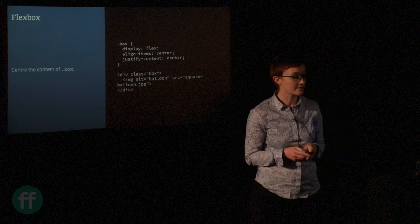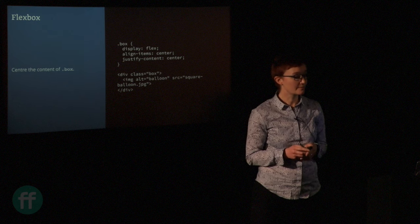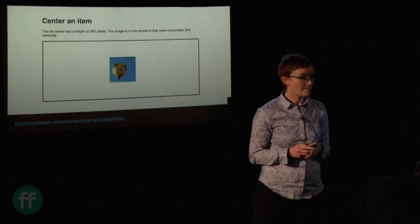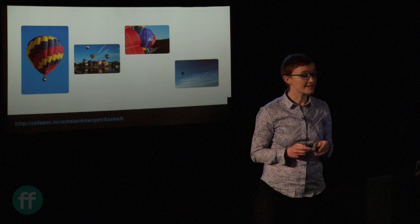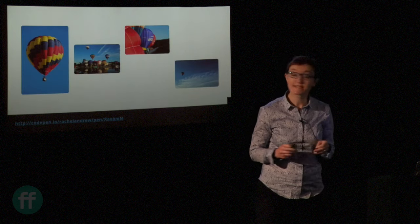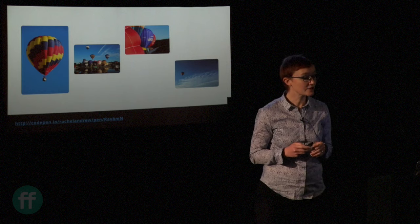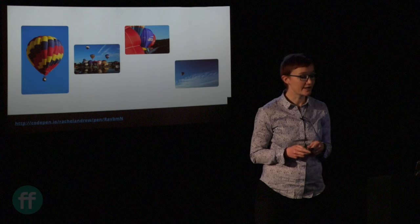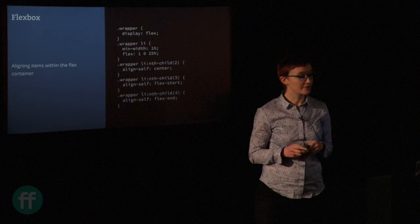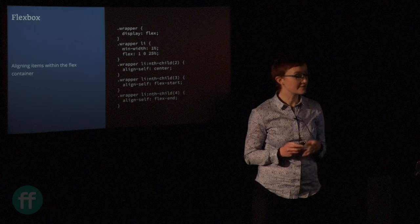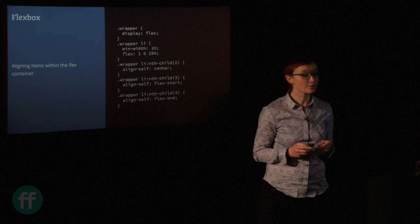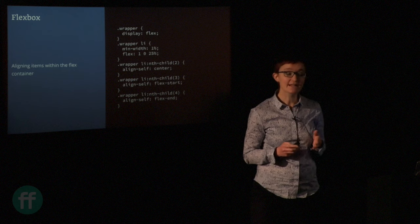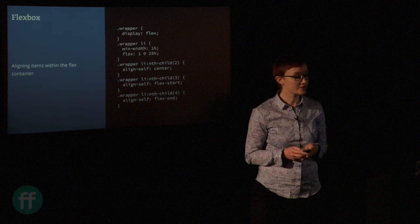All my slides have code links — I'll be publishing the slides later so you can look at all the examples. In the second example I've got a flex layout where the height of the flex container is defined by the taller image, and then using flexbox alignment properties to align the landscape images inside that flex container. I'm using align-self here to align the individual items — so for flexbox we've got align-self center, flex-start, and flex-end to align inside that flex container.